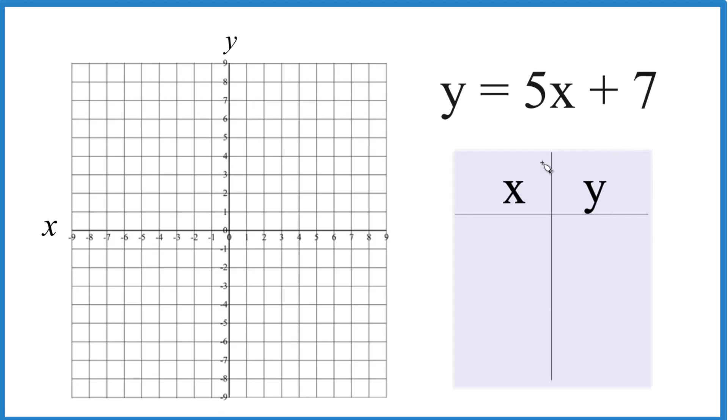So for the table of values, I like to start out with 0. You can really choose any numbers, but we do want it to fit on the graph here. So 5 times 0, that would be 0, so 0 plus 7, y is 7.